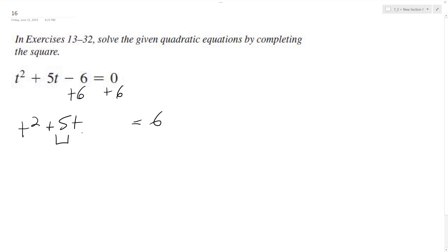Completing the square, we'll take half the middle term and square it. That's 5 over 2, and this squared equals 25 over 4. We add 25 over 4 to both sides.